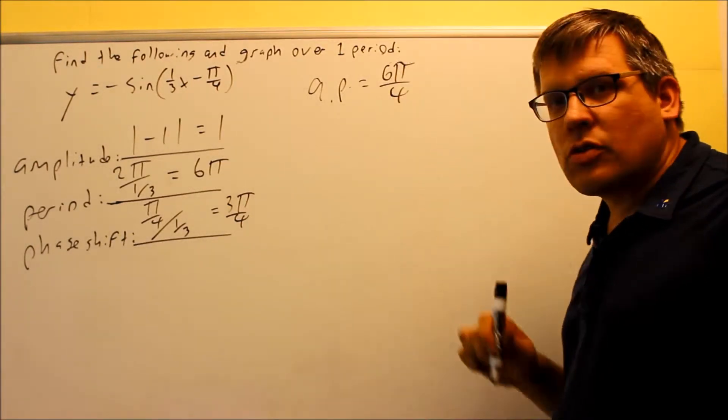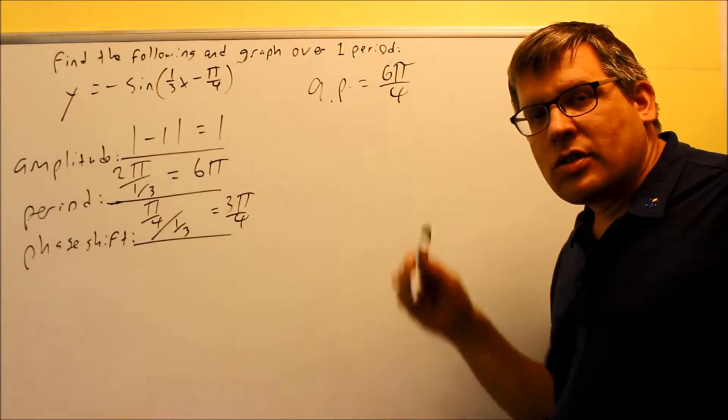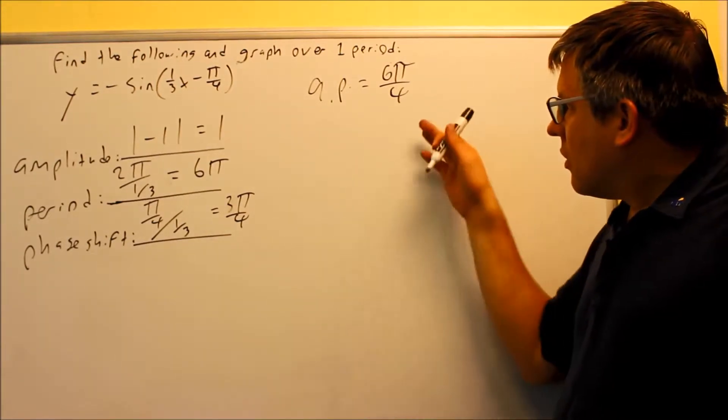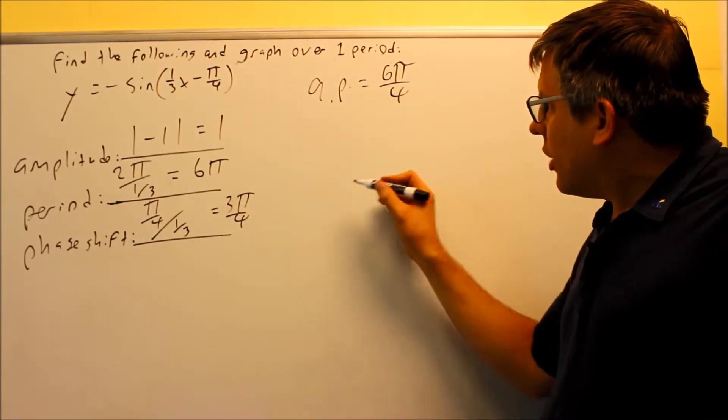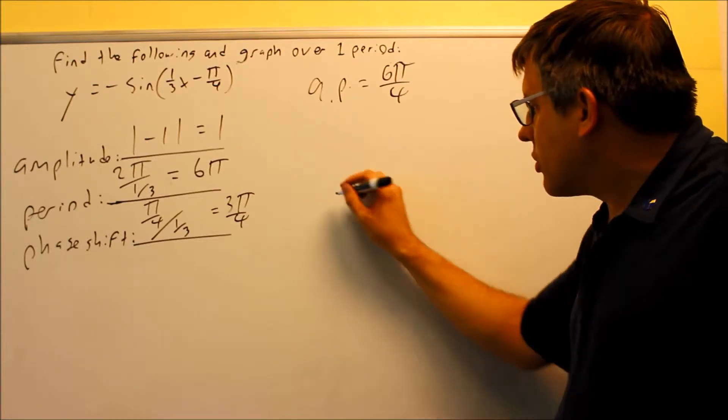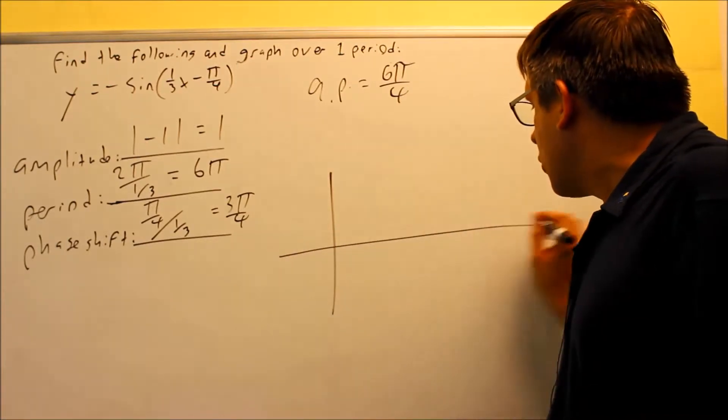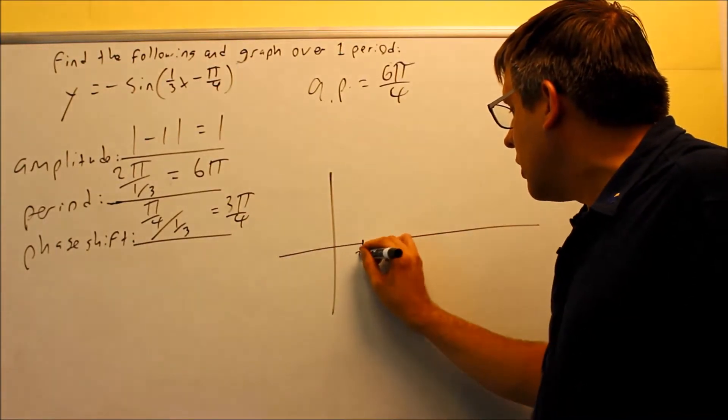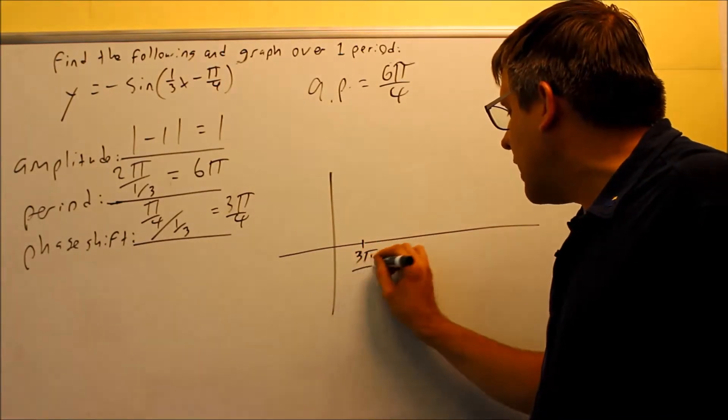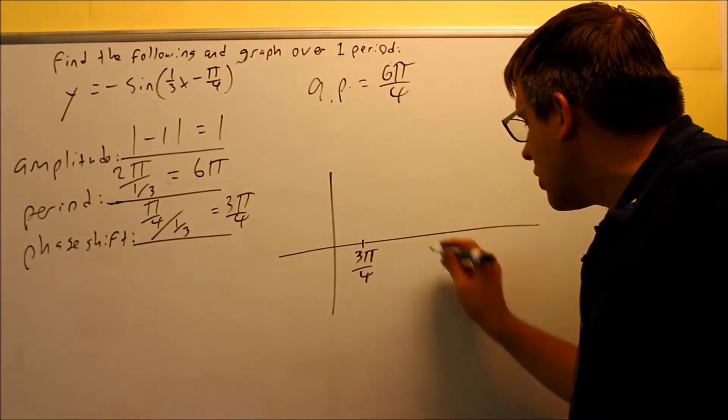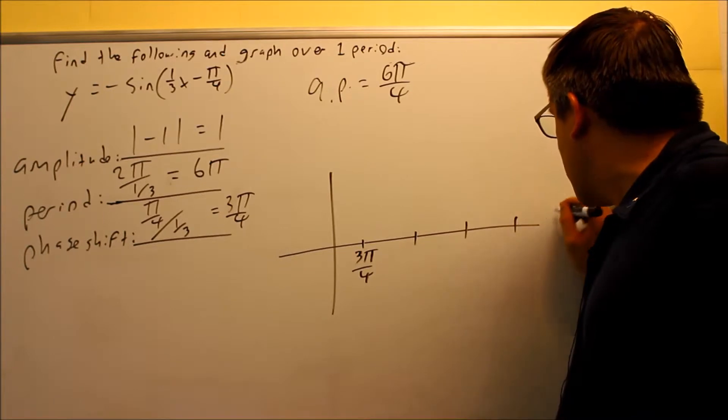So when you see that happening, you don't have to reduce it. It will make it easier to add and get all your key points. So because of that reason, I'm going to go ahead and do that all the way across here. I'm going to start by drawing the graph. So right here, this is going to be 3π/4. That's my phase shift. I want to find out the rest of these points.